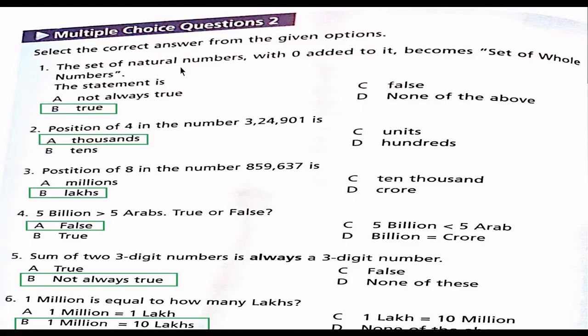Question 1: The set of natural numbers with 0 added to it becomes set of whole numbers. The statement is true. This is true statement. Actually, the whole number is the set of natural numbers included with 0. Therefore, this is true. We circle the B.